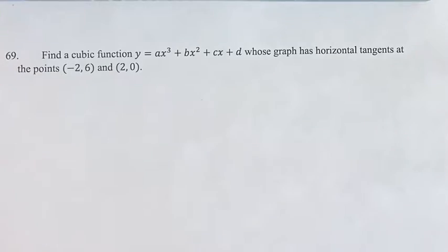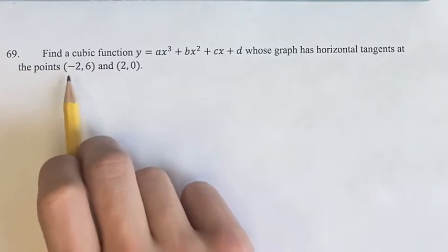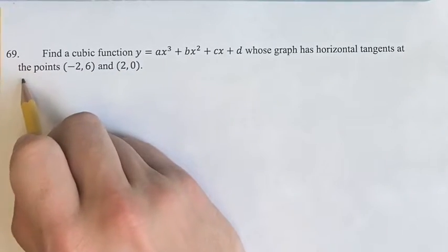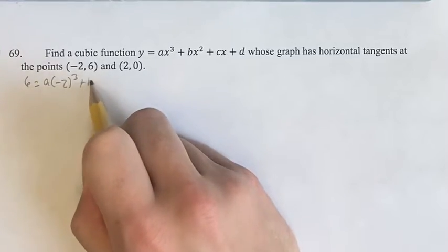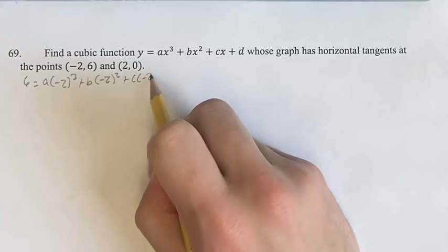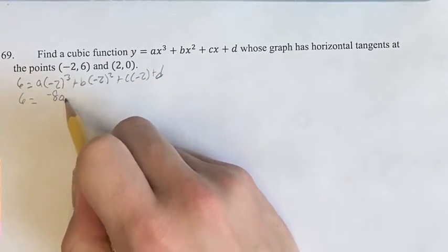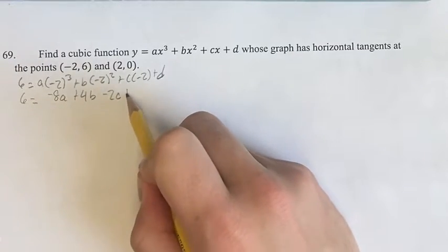So firstly, we know that these points are on the graph. So we can use that to plug in 6 for y, negative 2 for x, and then 0 for y and 2 for x. So we get 6 equals a times negative 2 cubed plus b times negative 2 squared plus c times negative 2 plus d, which gives us 6 equals negative 8a plus 4b minus 2c plus d.